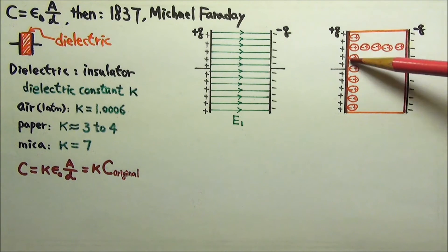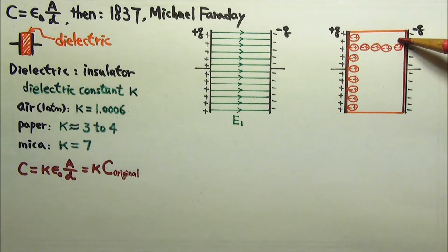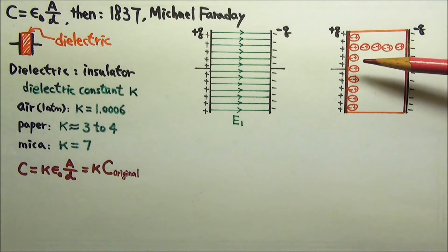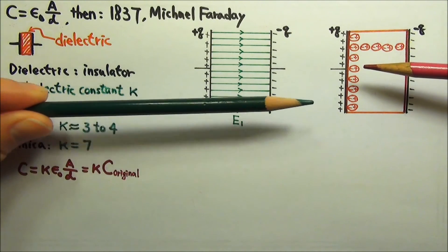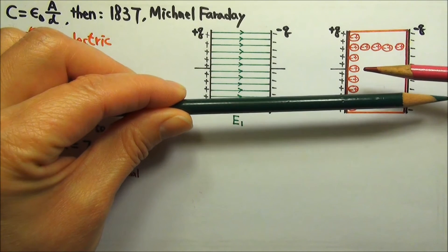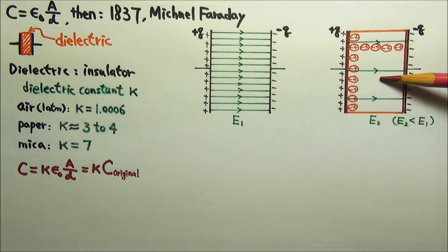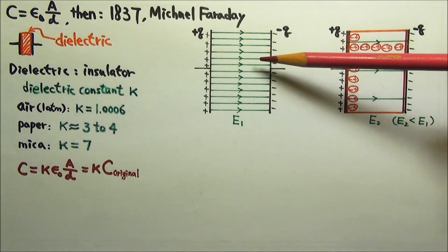These polarized molecules also produce electric field, and their electric field goes out of the positive charge and into the negative charge, mostly opposite in direction to the field produced by the charges on the plates. This makes the net electric field E2 here weaker than the electric field over there.